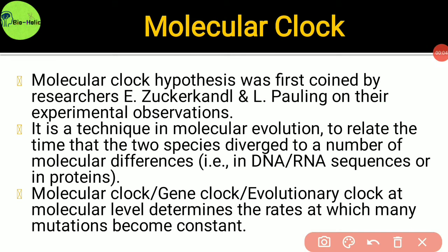The molecular clock hypothesis was first coined by researchers E. Zuckerkandl and L. Pauling based on their experimental observations. It is a technique in molecular evolution to relate the time that two species diverged to the number of molecular differences — that means differences in DNA or RNA sequences or in proteins.